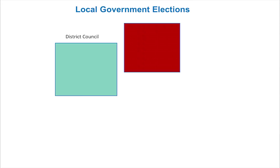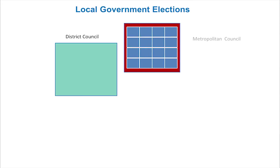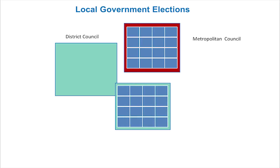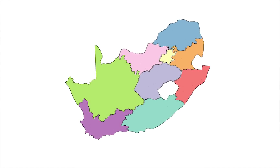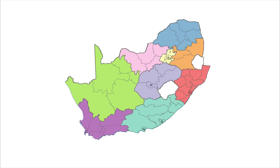Local government elections are held to elect councils. The nine provinces in South Africa are divided into districts and metropolitan councils. In South Africa, we have 257 municipalities divided into three types of municipal councils.